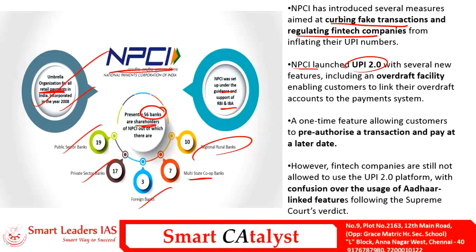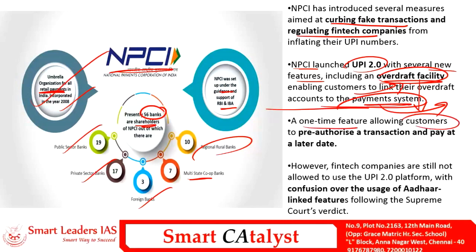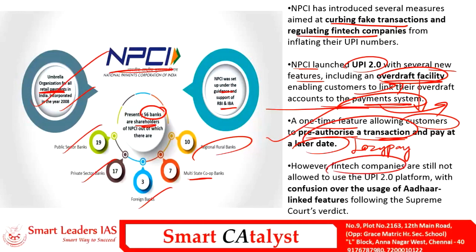NPCI recently launched UPI 2.0 with several new features, including an overdraft facility which allows customers to withdraw money even without a balance in their account, with the ability to link this overdraft account to the payment system. Another feature is a one-time mandate allowing customers to pre-authorize transactions and pay at a later date — similar to a 'buy now, pay later' model. However, private and fintech companies are still not allowed to use the UPI 2.0 platform due to the government's recent move and the Supreme Court's verdict restricting usage of linked features by private entities.